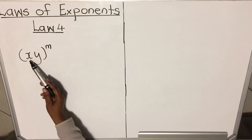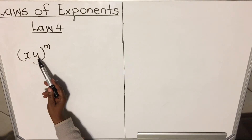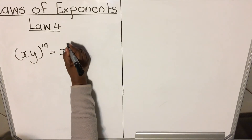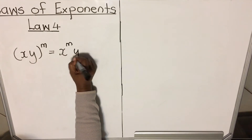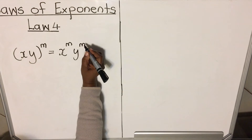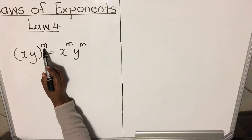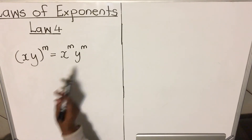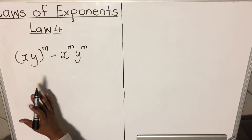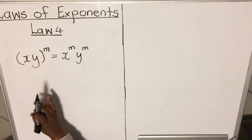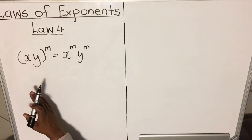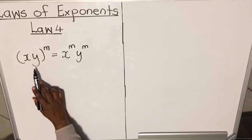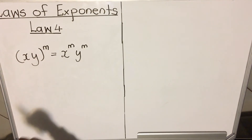Law four says: if you are multiplying two things — x times y — and everything is raised to the power m, you get x to the power m multiplied by y to the power m. Each factor gets the power m. Notice that all these laws of exponents work with multiplication and division only. When you are adding or subtracting, these laws do not work.